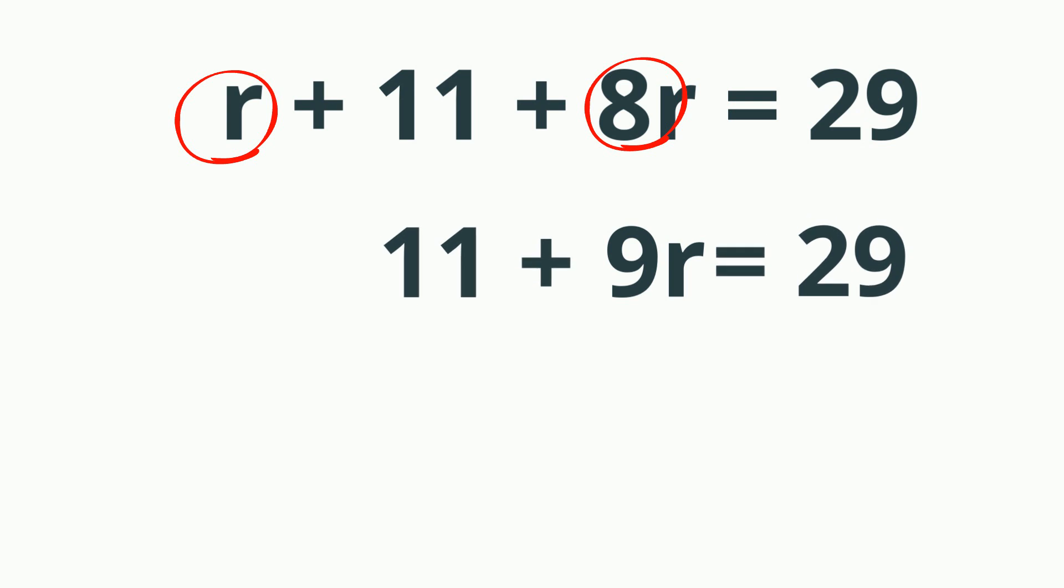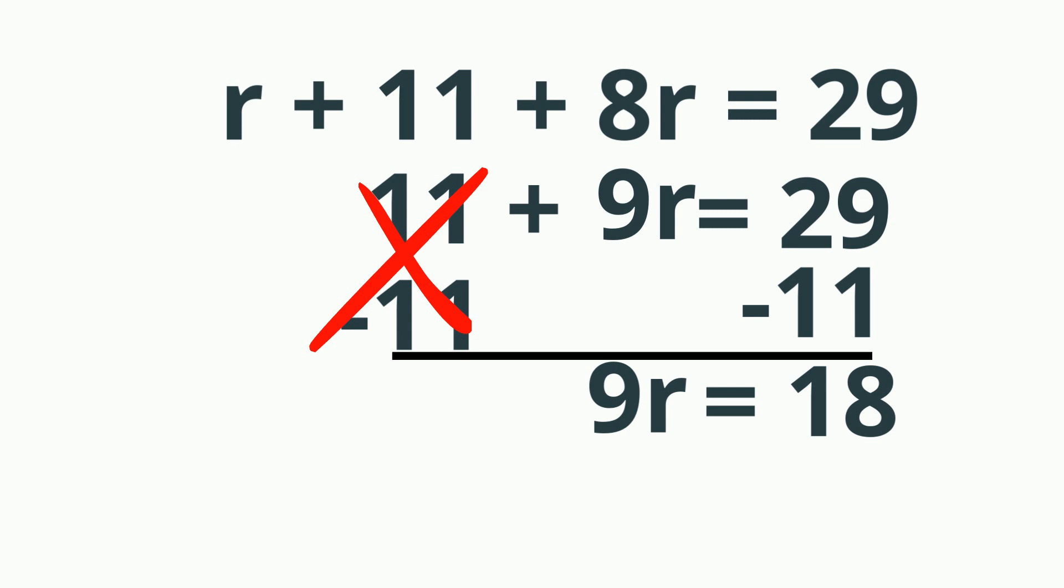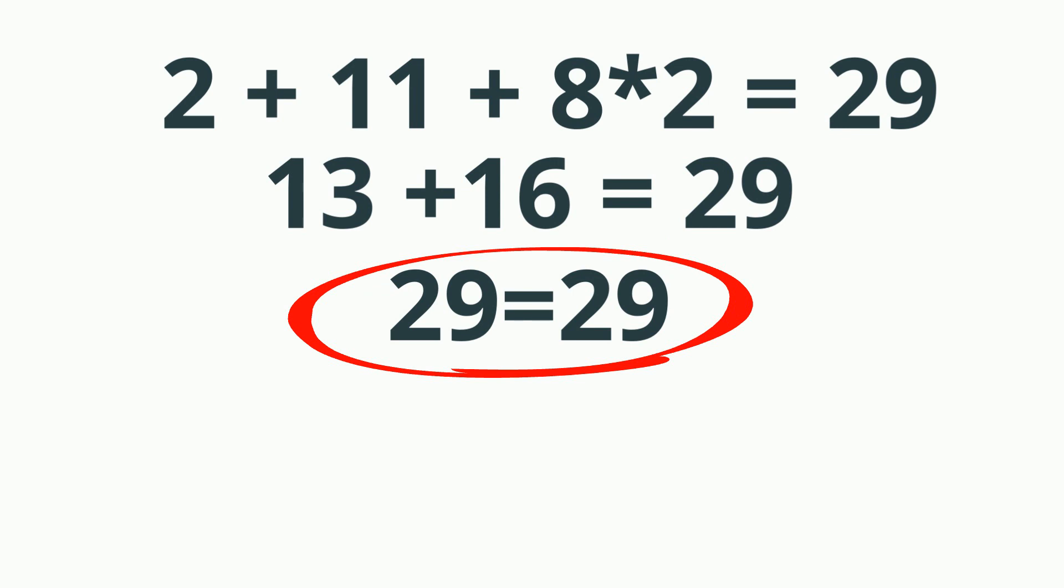Now to isolate the 9r, I'm going to subtract 11 from both sides. So bring down the 9r and 29 minus 11 is 18. Undo the multiplication of 9r by dividing both sides by 9. So r equals 2. Plug it back in just to check my work. And it does work out.